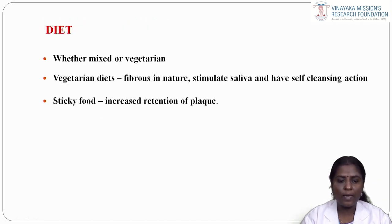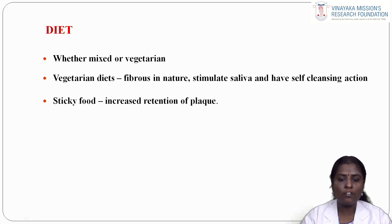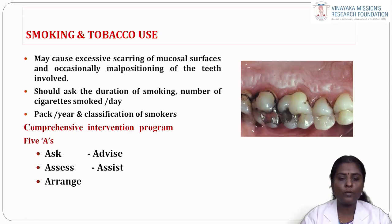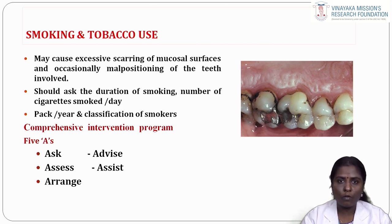Regarding diet, ask whether the patient is on a mixed or vegetarian diet. Vegetarian diets are mostly fibrous in nature, stimulate saliva and have a self-cleansing action. The more sticky food consumed, the greater the retention of plaque. Regarding smoking and tobacco use, it may cause excessive scarring of mucosal surfaces. Ask about the duration of smoking and the number of cigarettes smoked per day. The WHO classification of smokers — pack per year — should be well known. When the patient is identified as a smoker, take up the comprehensive intervention program.